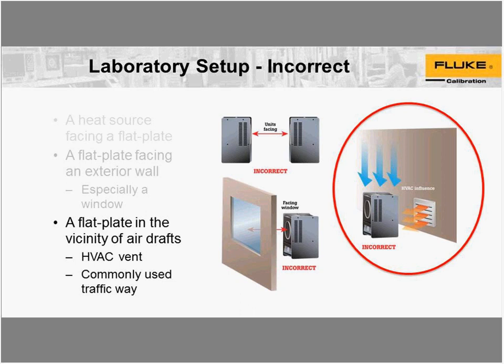You also don't want to have a flat plate in the vicinity of air drafts — for instance near an HVAC vent. That can really influence the amount of heat coming off the plate by convection and create an artificially lower temperature. Another thing to keep in mind: keep the flat plate away from commonly used traffic ways, such as a pathway next to the calibration area where people are constantly going by — especially a problem if you locate your instrument close to a door that's constantly being opened and closed. Again, the problem here is artificially high convection caused by air drafts in the laboratory.